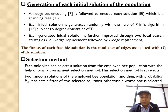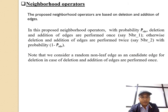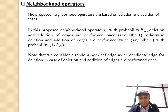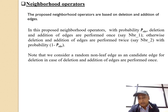For the selection method, each onlooker bee selects a solution from the employed bee population with the help of binary tournament selection. Regarding neighborhood operators, our proposed neighborhood operators are based on deletion and addition of edges. With probability p, deletion and addition of edges are performed once; otherwise, deletion and addition of edges are performed twice with probability 1 minus p. Note that in the case where deletion and addition of edges are performed once, a random non-leaf edge is deleted.